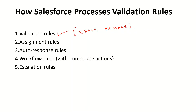You have to rectify that particular thing from that record before you can save it to the database. We have validation rules in place in Salesforce because businesses often have requirements — for example, when the country is India, only Indian states should be allowed to be selected. Similarly, if a first name or last name field has some numeric value entered by mistake, you can have a validation rule that only allows the field to be saved if it contains all characters.